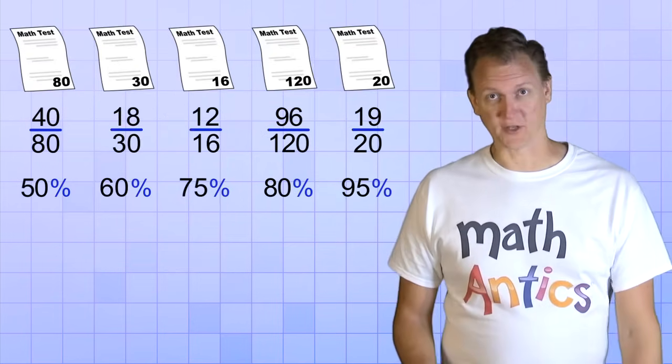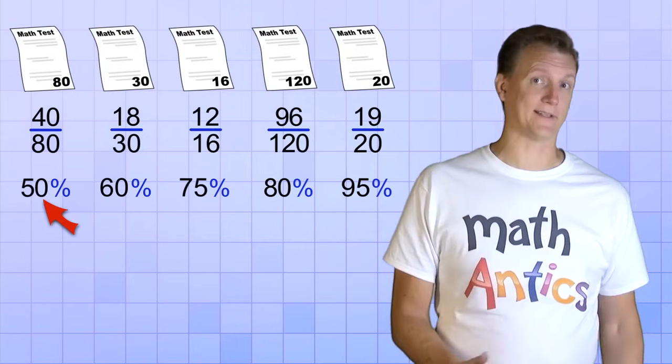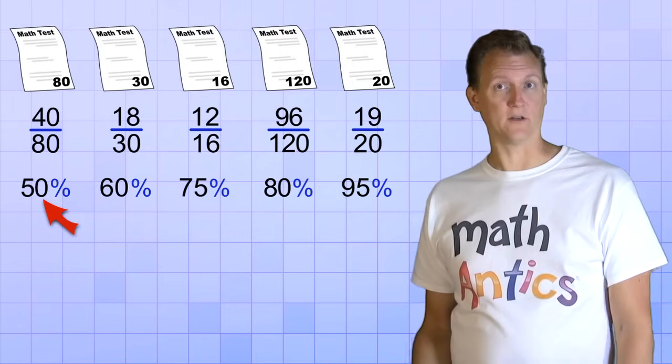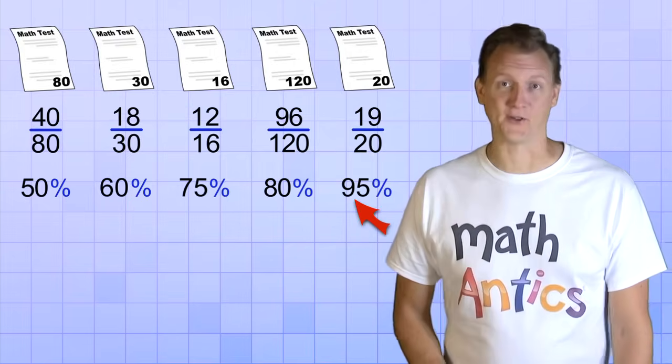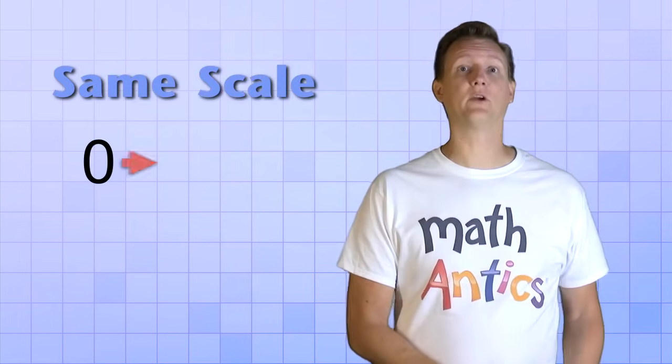Wow! Now it's much easier to compare the scores. On the first test, the student only got 50% or half correct. But they did better on each test they took during the year. 60%, 75%, 80%, and finally 95% on the last test. The reason percents can help us easily compare things is because they're always on the same scale that ranges from 0 to 100.